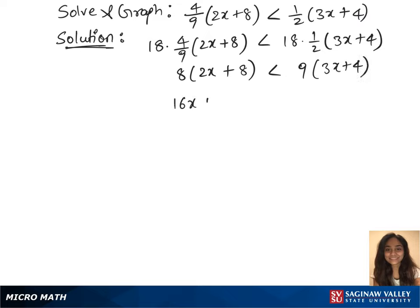So we have 16x plus 64 on the left less than 27x plus 36 on the right. Now subtract 27x and 64 on both the sides. So that gives us 16x minus 27x less than 36 minus 64.